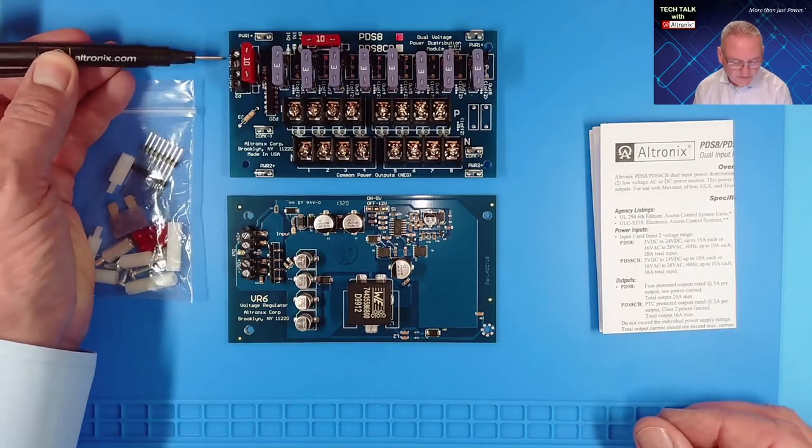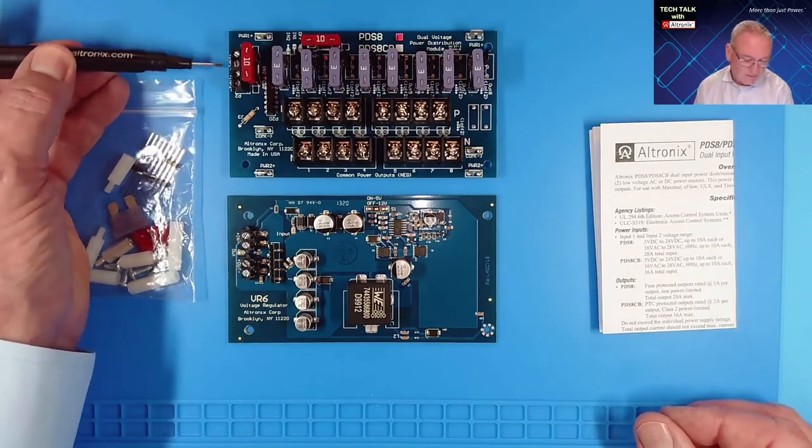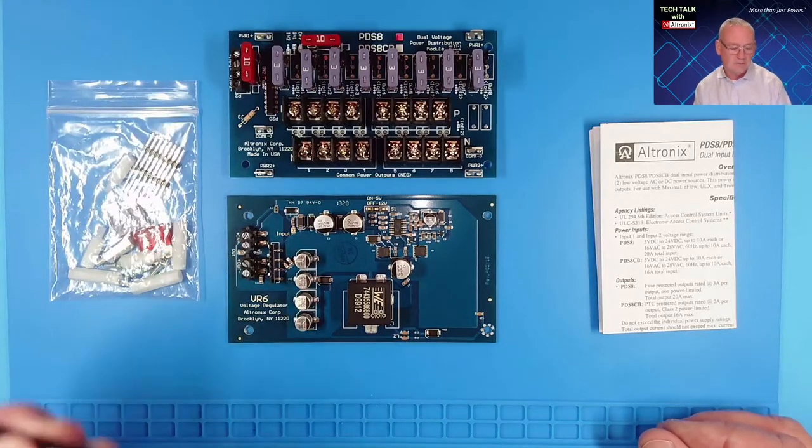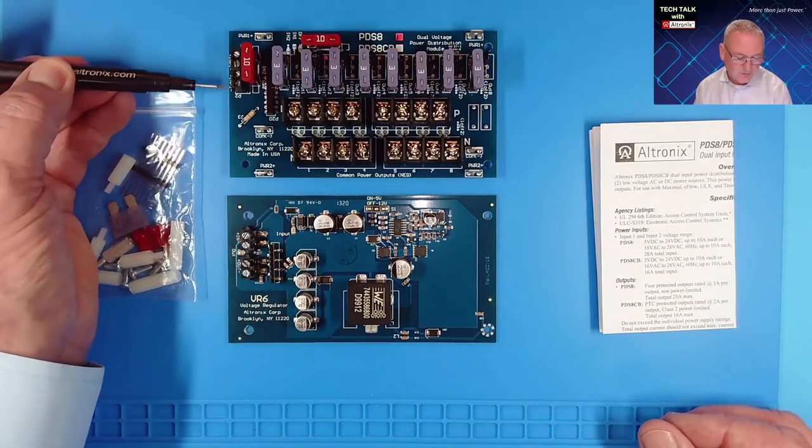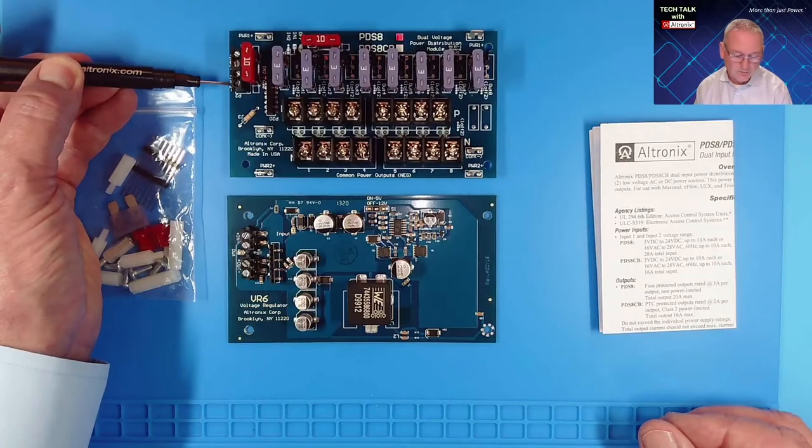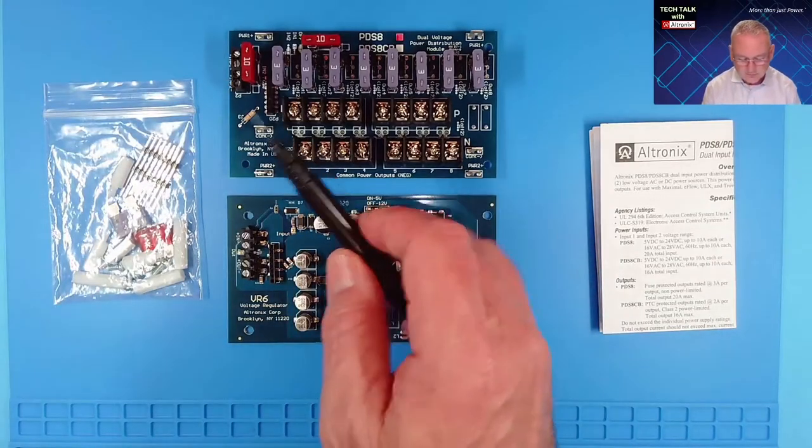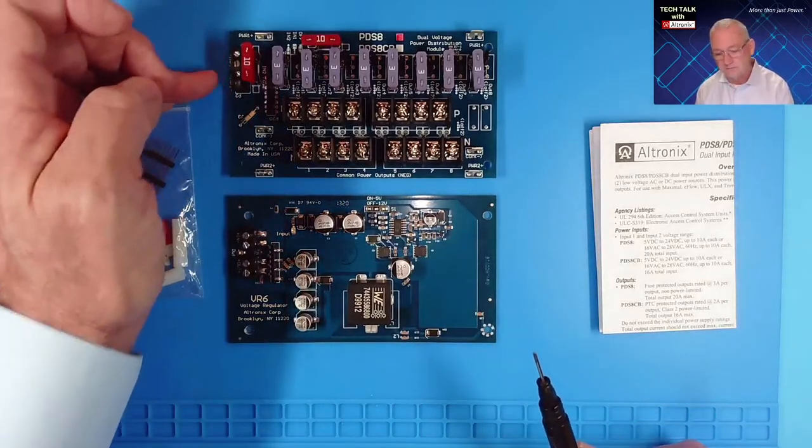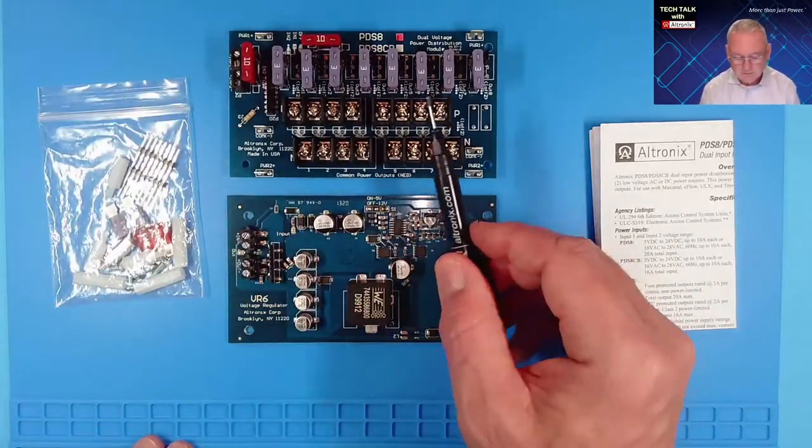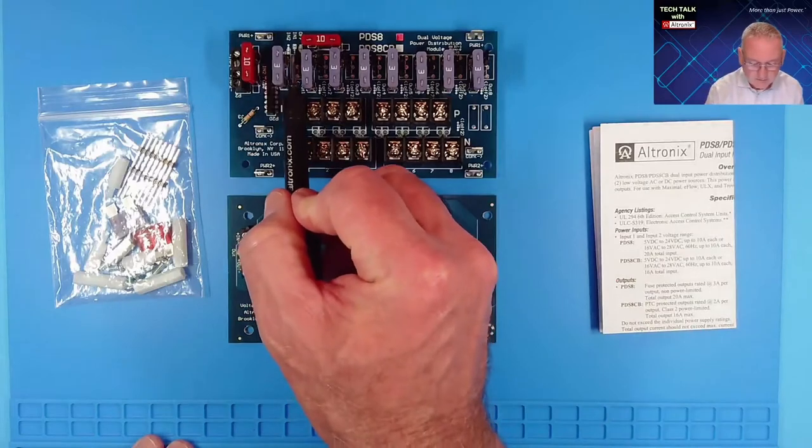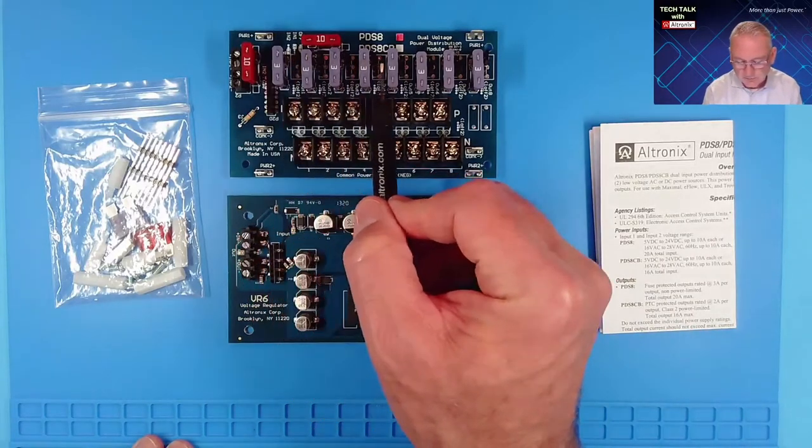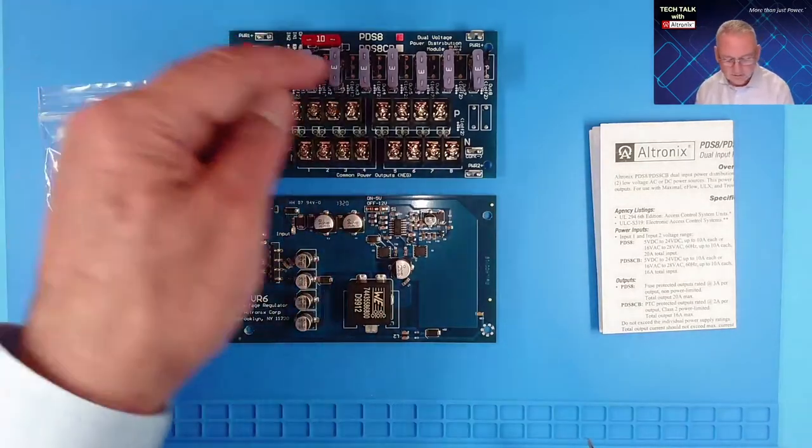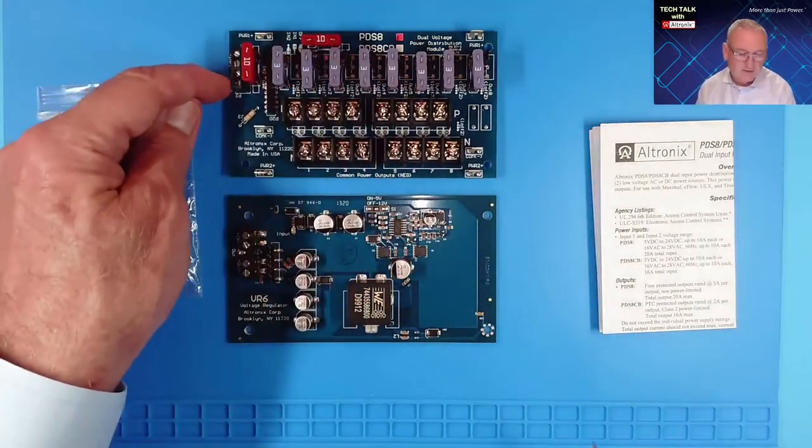Now the PDS-8 board on the left side, you'll see an input 1 and input 2. We could use this with two independent power supplies. For example, 24 volts in input 1 and 12 in input 2. That would allow us to select out of the 8 outputs 24 or 12 volts individually. The way we would do that is using the jumper pins that are in between the fuses. The top set will select input 1 and the lower set will input 2.